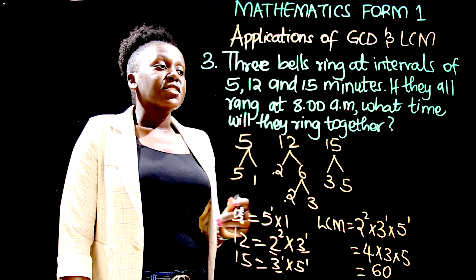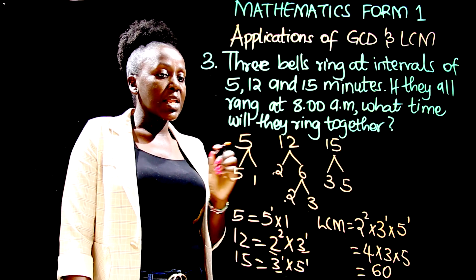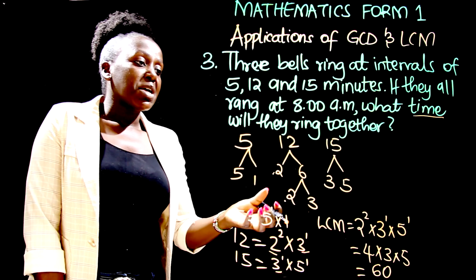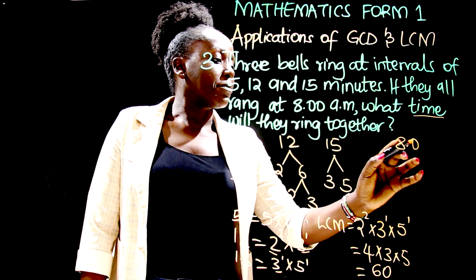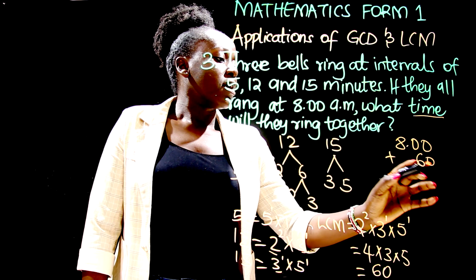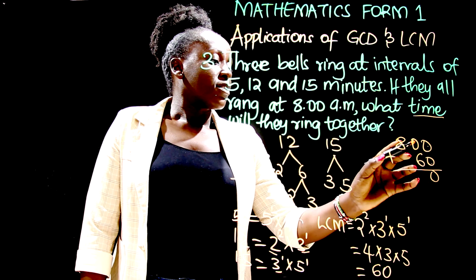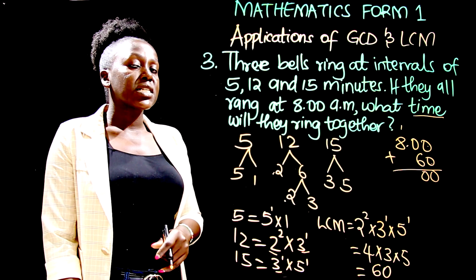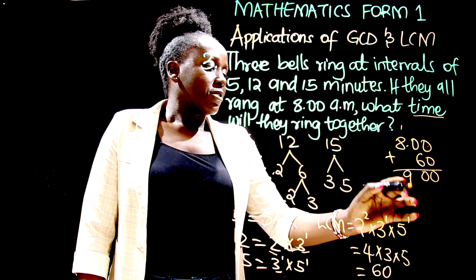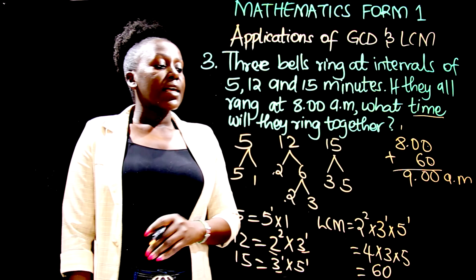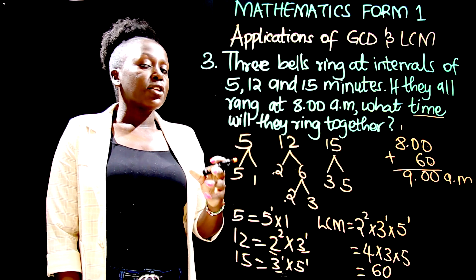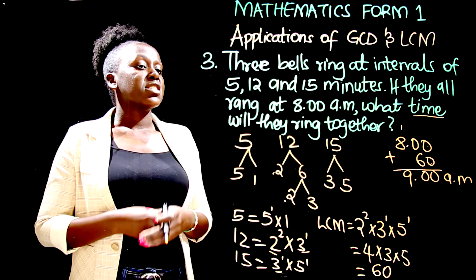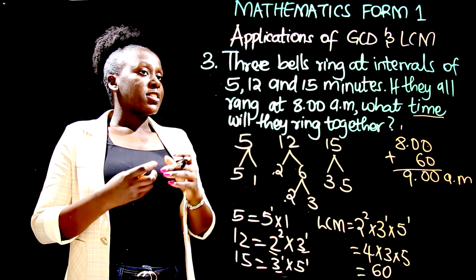After 60 minutes. So we have 8:00am and we add 60 minutes. 60 minutes is equivalent to 1 hour, so we get 9am. At 9am these 3 bells will ring together again. After another 60 minutes they will ring together again. So we can say that after every hour these bells ring together.